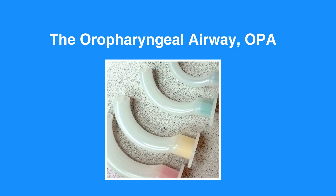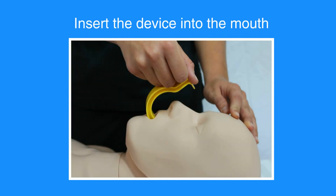To insert an oropharyngeal airway, or OPA, first clear the mouth of blood and secretions with suction if possible. Place the device at the side of the individual's face. Make sure to choose a device that extends from the corner of the mouth to the earlobe. Insert the device into the mouth so the point is toward the roof of the mouth or parallel to the teeth. Do not press the tongue back into the throat.